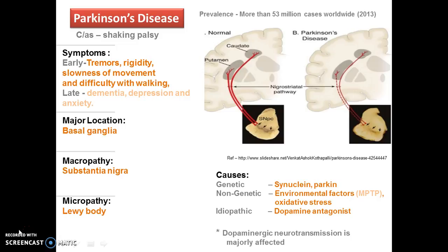The neurotransmission majorly hampered in Parkinson's disease is dopaminergic neurotransmission, which is further responsible for dementia and depression.